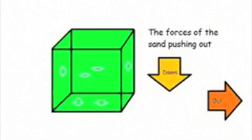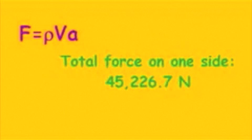The sand in the box exerts a downward and outward force on the walls. Using the equation F equals ρVa, we found that the total force on each side is 45,226.7 newtons.